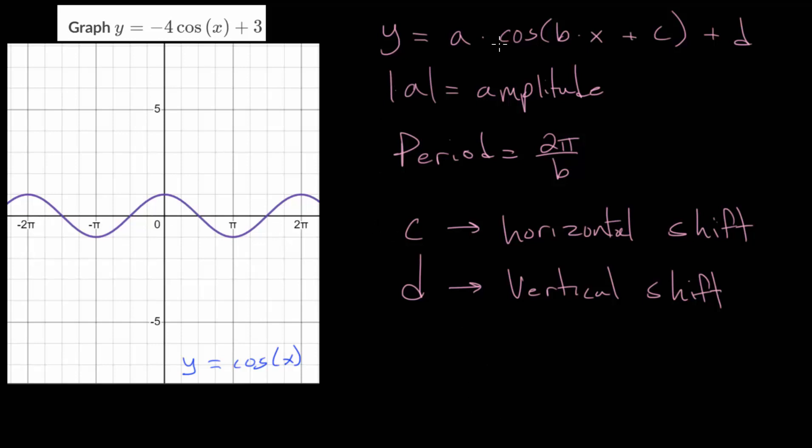The value of d also affects the midline, the line that essentially cuts the function in half horizontally. Knowing what each of these parameters actually does will help us construct a picture of this graph. For our example, we have y equals -4 times cosine of x plus 3.